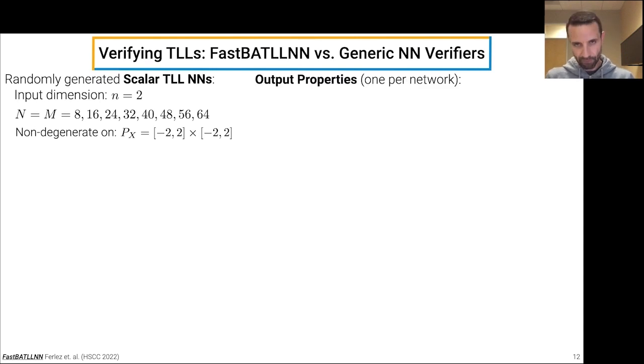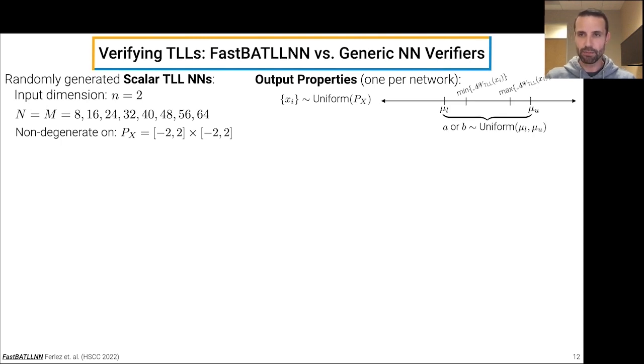So just to be explicit, we generated one property then for each of these networks in a random way. So we took some random samples from this input polytope. We found the max and the min output of the neural network, the associated neural network for those samples, and we chose the property to verify to be uniform on an interval that was equally likely to result in a true property or a false property with the direction of the equality chosen by a coin flip.